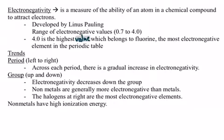Hello, everybody. Today we're going to look at two more periodic trends: electronegativity and electron affinity. Let's start with electronegativity. Electronegativity is a measure of the ability of an atom in a chemical compound to attract electrons to itself.